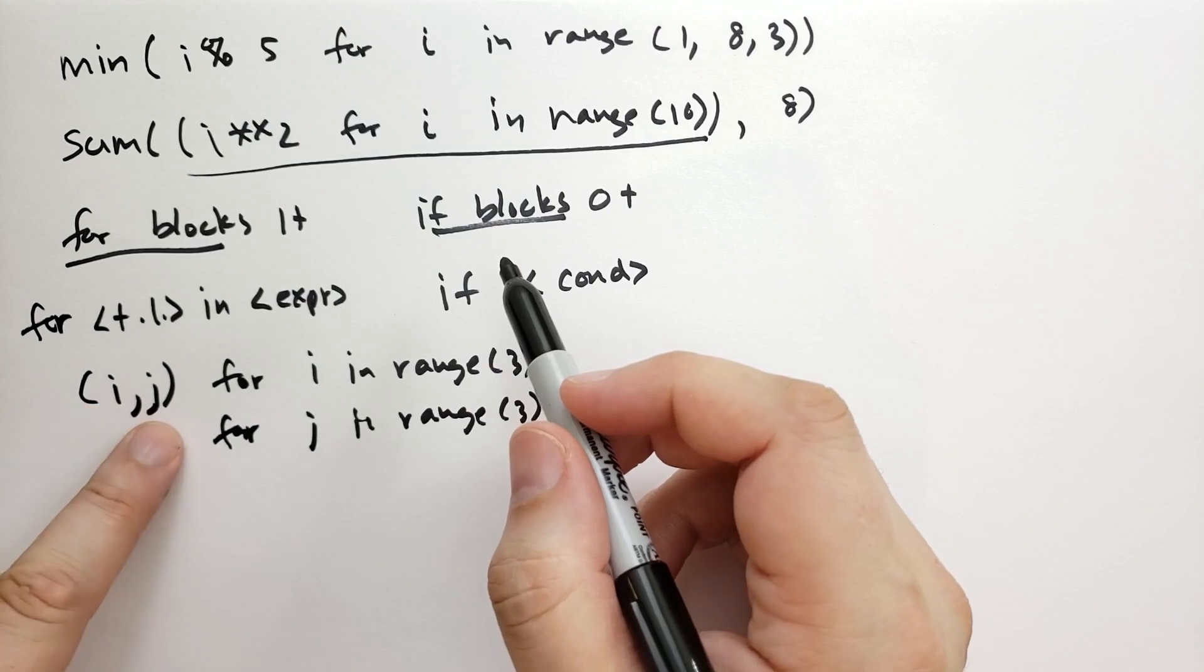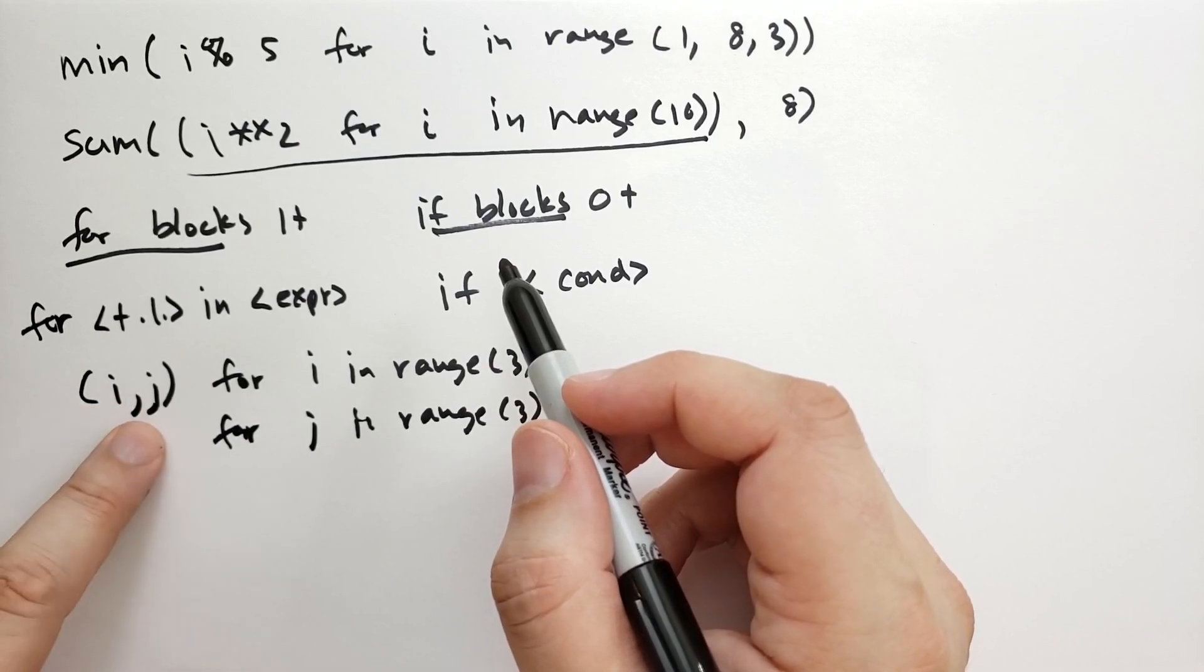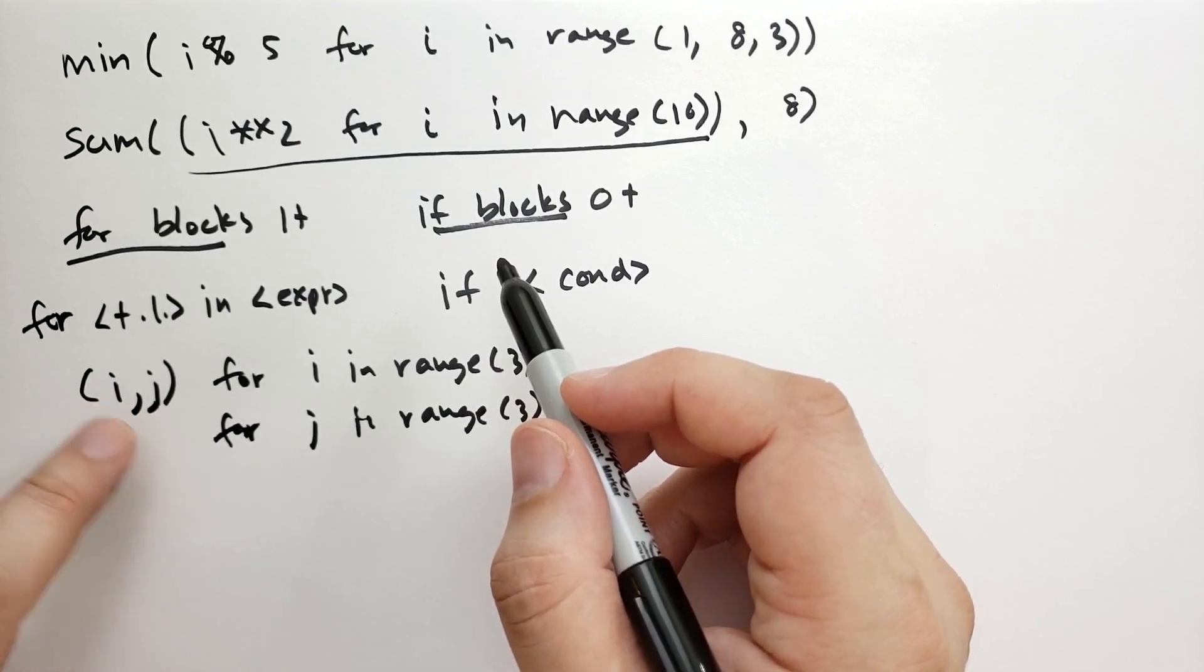And this will generate (0,0), (0,1), (0,2), and then (1,0), (1,1), (1,2), and then (2,0), (2,1), (2,2).